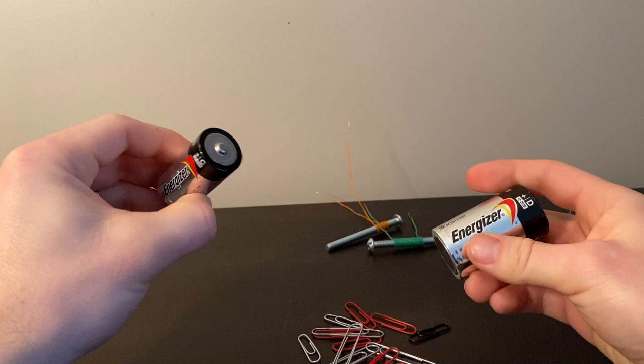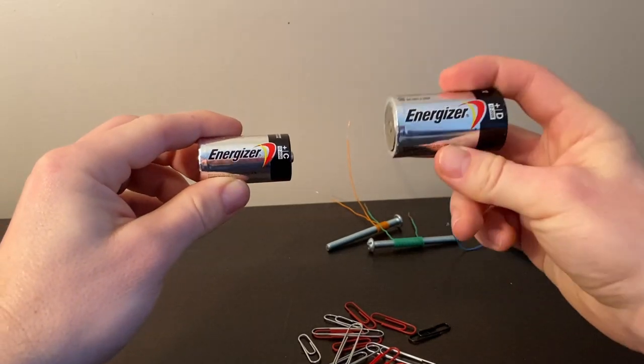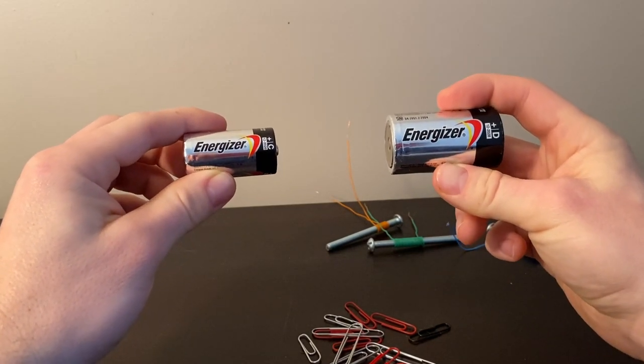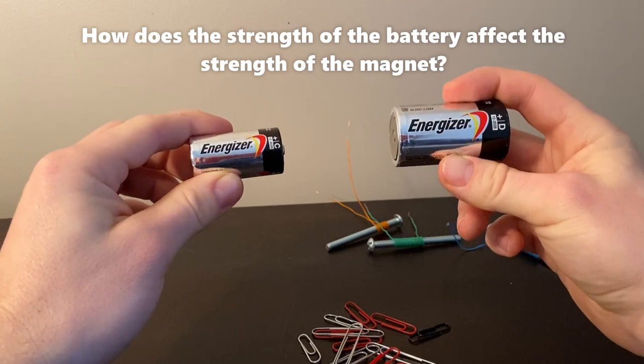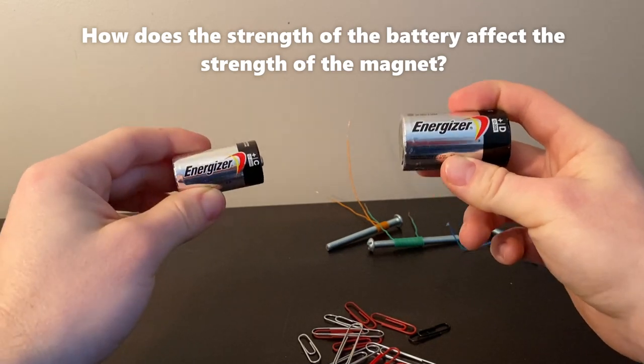So I have two batteries here. I have a C battery and a much bigger D battery. And we're going to explore how the strength of our battery affects the strength of our electromagnet.